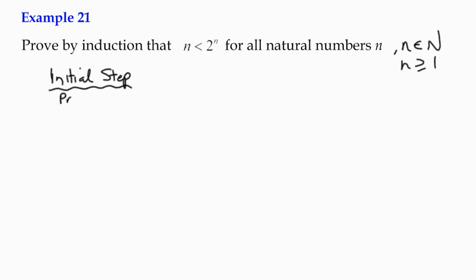...is to prove true for the smallest value of n, which in this case is 1. We've got this n is less than 2 to the n, so the left-hand side of that is just going to be 1.